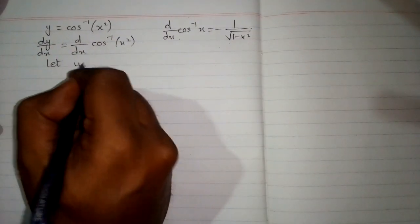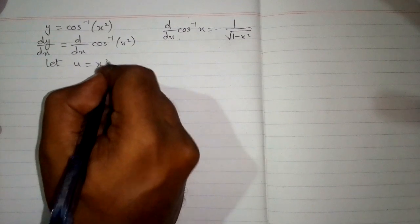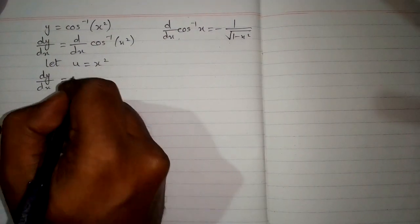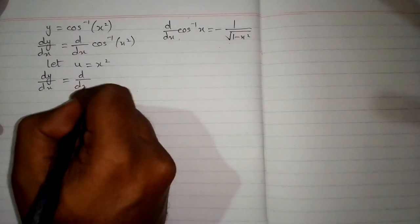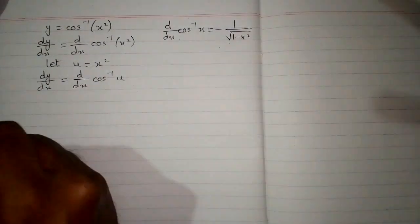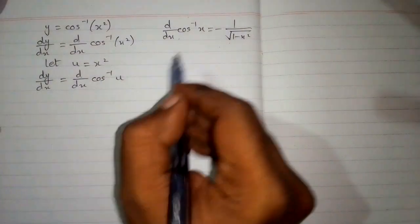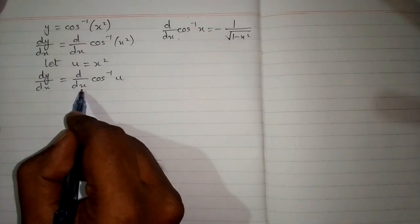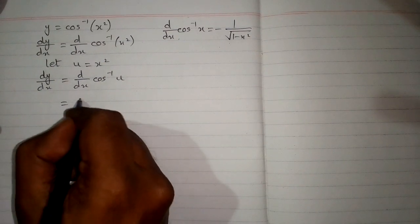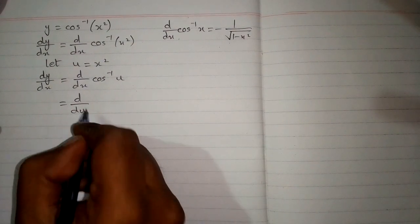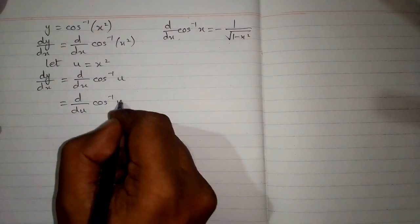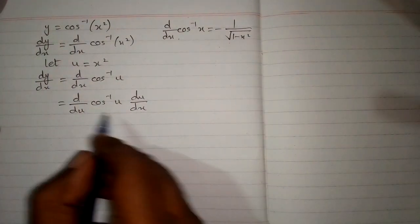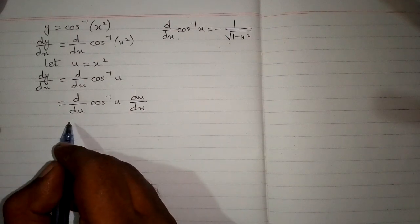So first we will suppose that this x square is u. So we have dy by dx equals dy by dx of inverse cosine of u. And because this variable and this variable must be the same, we must have du in place of dx, so we will put du over here. And in order to balance this du we will multiply it by du by dx. This is called the chain rule of differentiation.